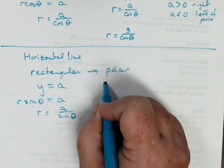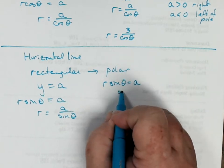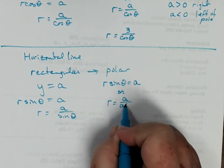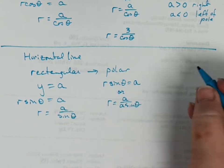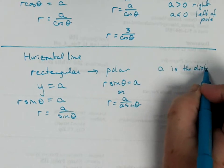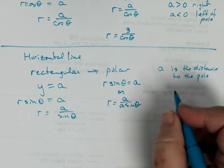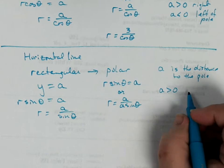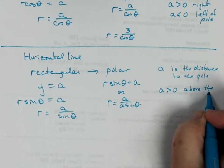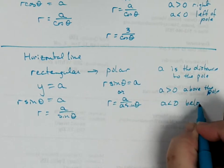So the polar form can either be r sine of theta equals a, or it could be r equals a divided by sine of theta. And a is the distance to the pole. If a is positive, your line will be above the pole. And if a is negative, it will be below the pole.